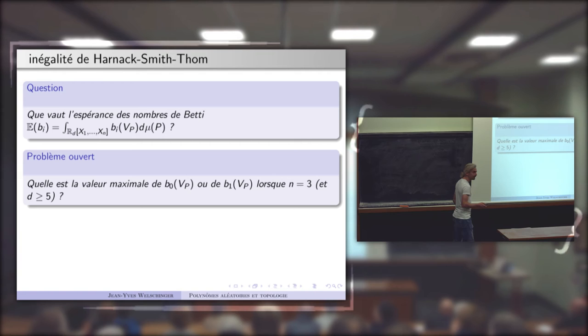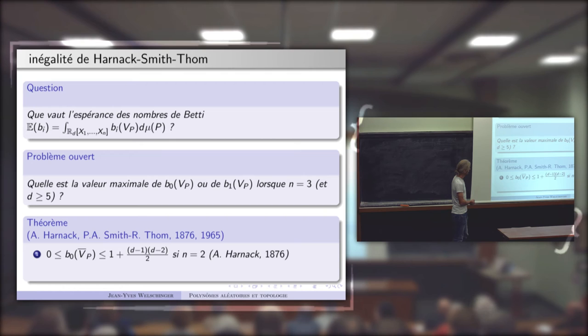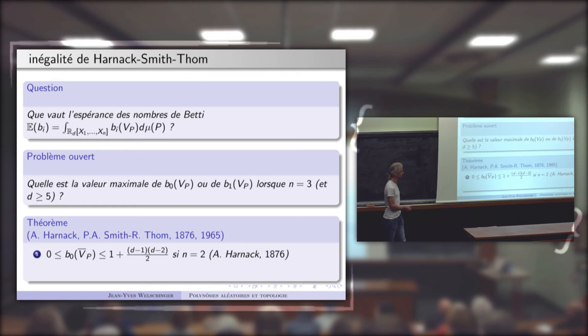On sait quand même trois choses. Par exemple, à deux variables, on connaît la réponse : le lieu d'annulation est simplement une courbe, et le nombre de composantes connexes est compris entre 0 et (d−1)(d−2)/2 + 1. C'est un résultat qui date de 1876 dû à Harnack.